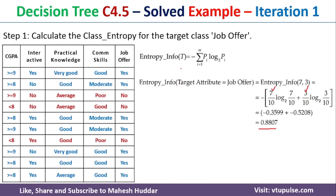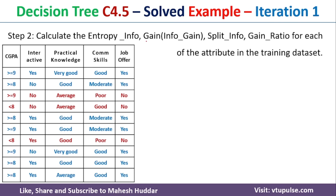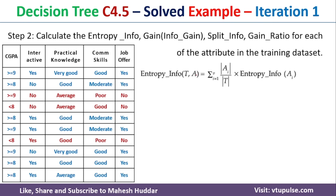Once we calculate the entropy info of the whole dataset, the next step is to calculate the entropy info of each attribute, information gain, split info, as well as the gain ratio for each attribute. The entropy info of an attribute A for training data T is: ∑(|Ai|/|T|) × entropy(Ai), where v is the number of possible values of A.